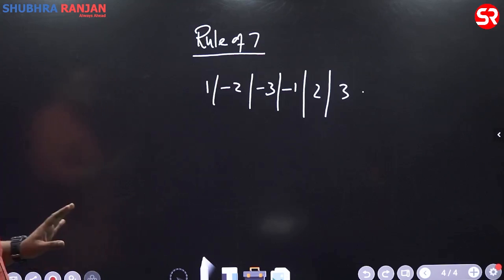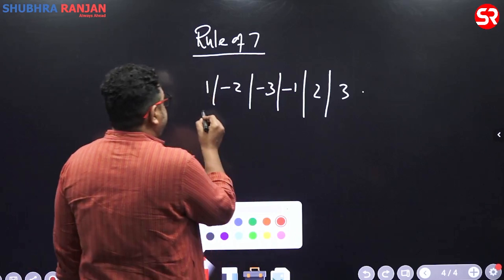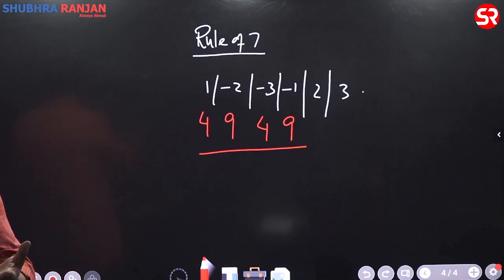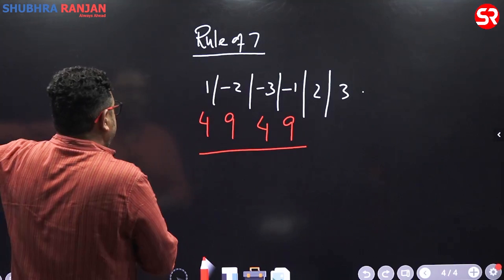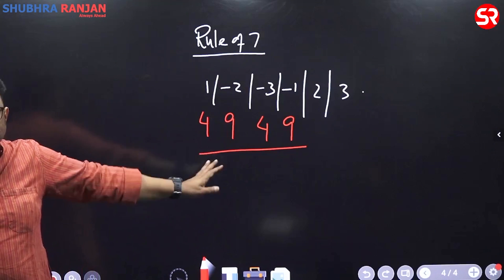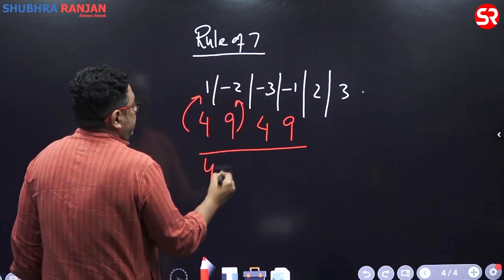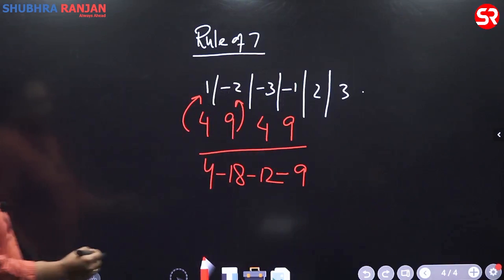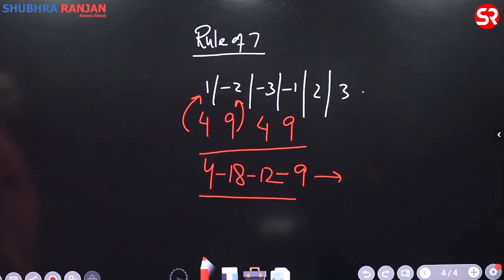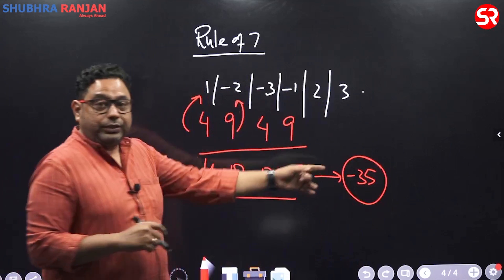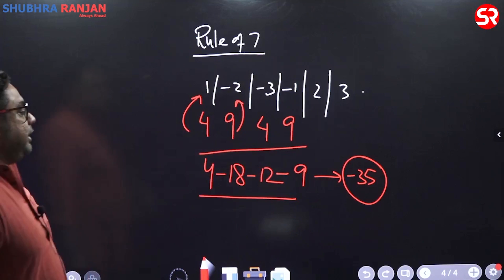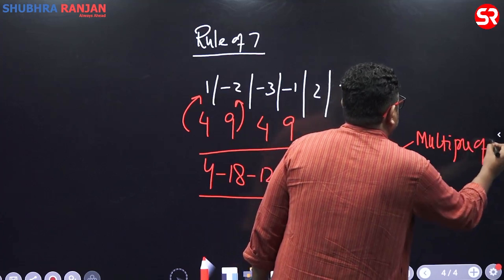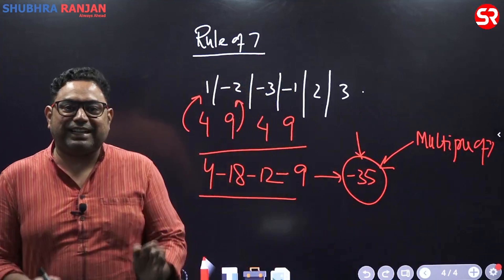Is 4949 a multiple of 7? Write 4949, and below it place the series 1, −2, −3, −1. Multiply: 4×1=4, 9×(−2)=−18, 4×(−3)=−12, 9×(−1)=−9. Adding: 4−18−12−9=−35. Since −35 is a multiple of 7, 4949 is exactly divisible by 7. Whenever the sum of these products is a multiple of 7, the number is exactly divisible by 7.